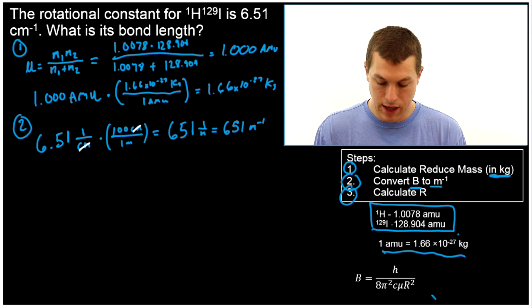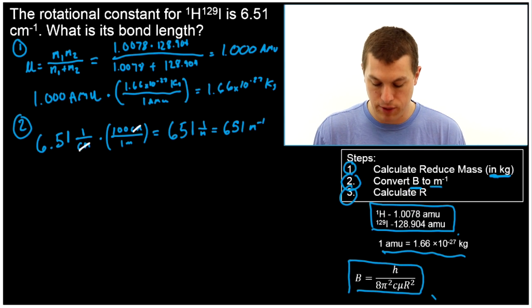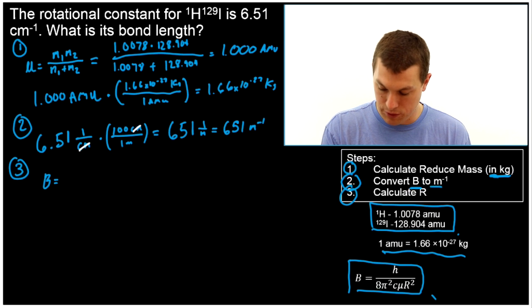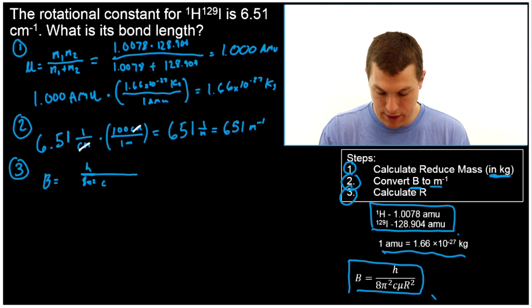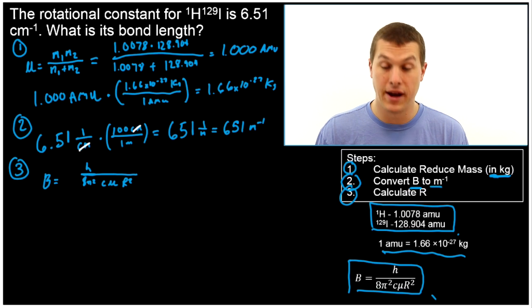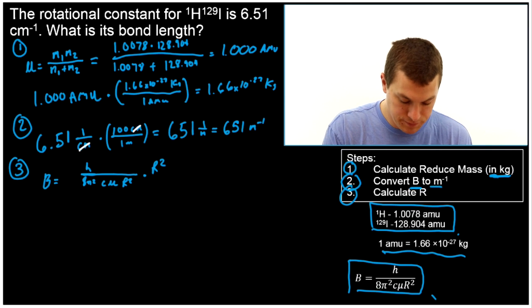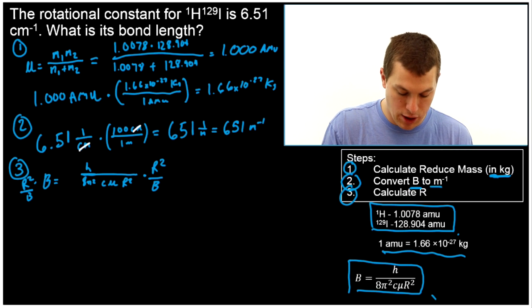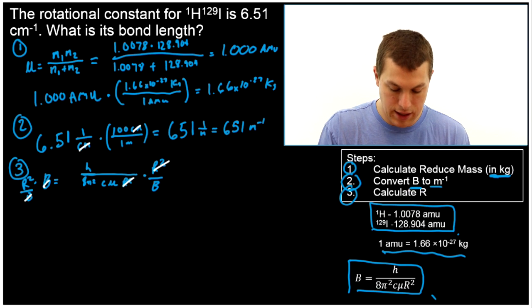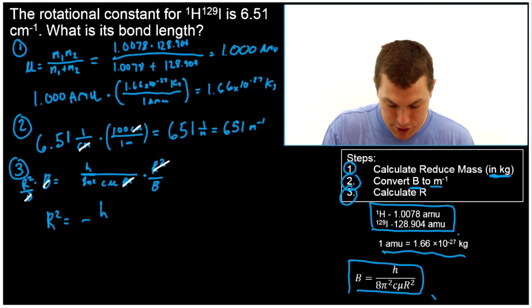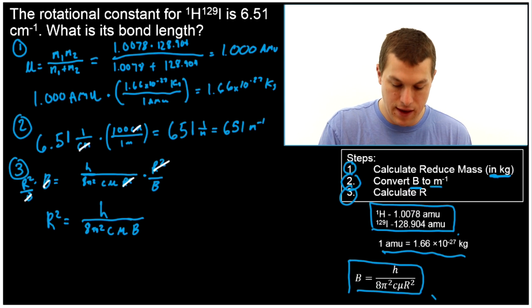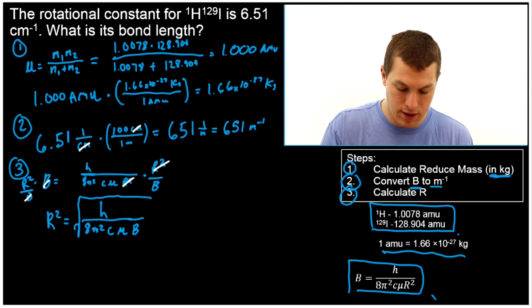All right, last step. Let's calculate our bond length. And we're going to do that with this equation that relates our rotational constant to our bond length. So that's going to take a little algebra. We start out with B equals H all divided by 8π² C μ R². And we need to get R by itself. So what we're going to do is we're going to multiply both sides by R squared and divide both sides by B to get B over on the other side. And that's going to cancel out our B over here and cancel out our R squared over there. And that means what we're going to get out is R² equals H over 8π² C μ B. And then we need to take the square root of both sides to get rid of that square.